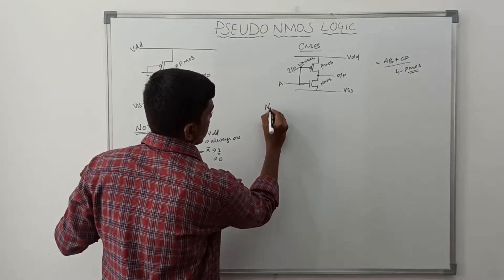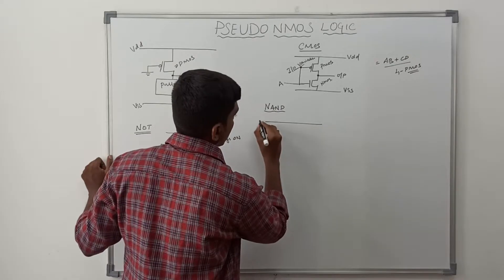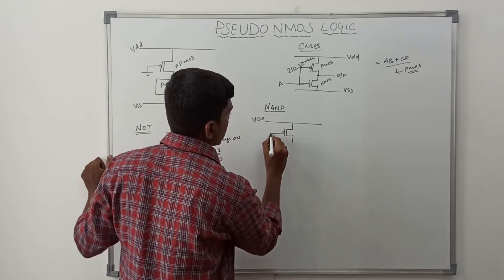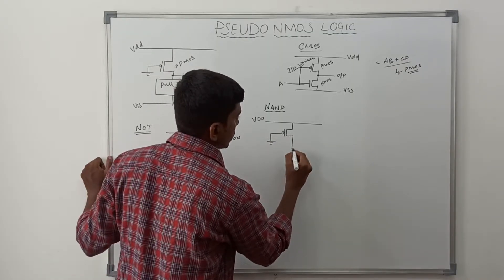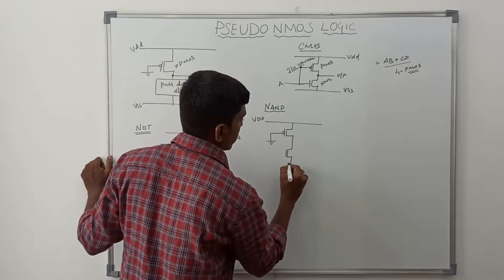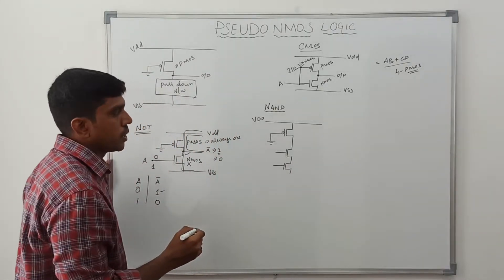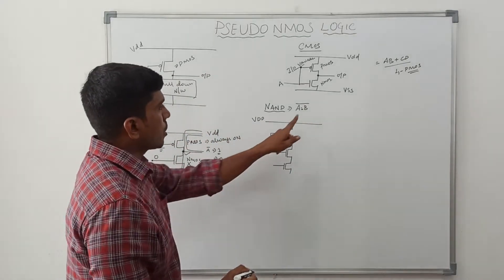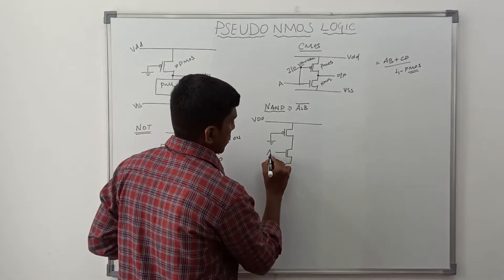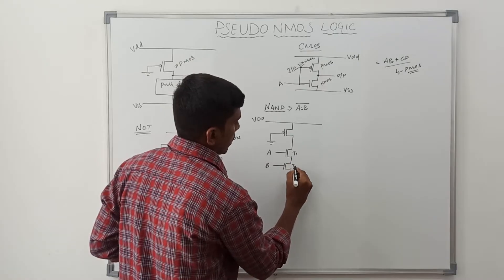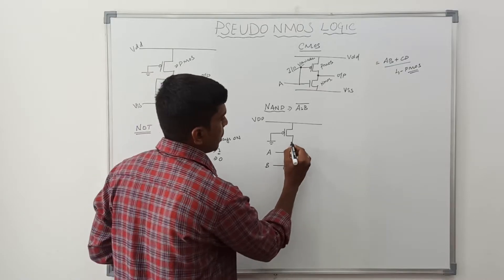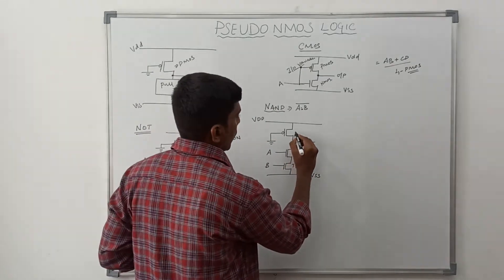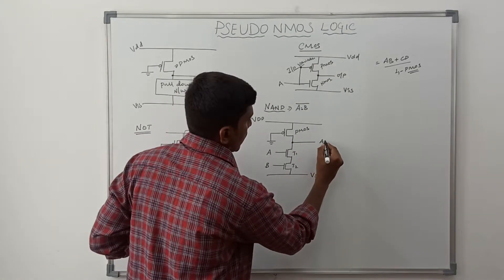Now A value is 1. Moving on to design the NAND gate. In pseudo-NMOS, only one PMOS transistor is required, and the gate of this transistor is permanently connected to ground. The Boolean expression of a NAND gate is A dot B, whole bar. The dot operator means the NMOS transistors are connected in series. So T1 is connected to input A and T2 is connected to input B. VDD is at top, VSS at bottom, and the output is taken between the PMOS and the series NMOS pull-down network.